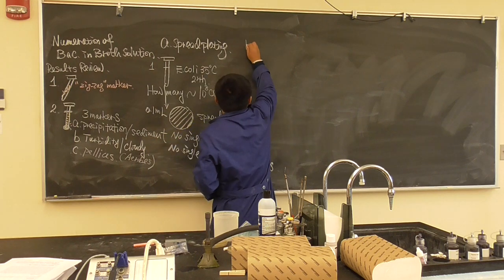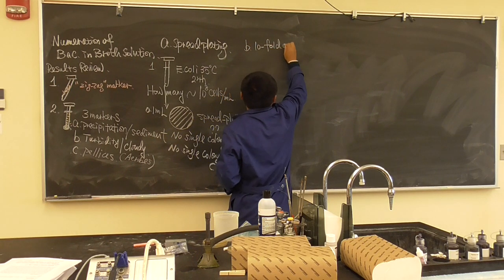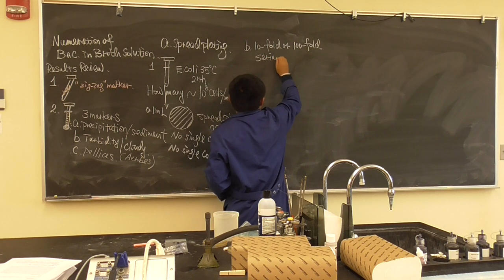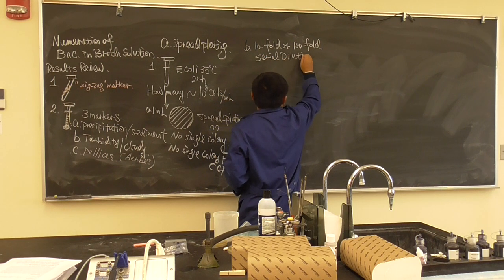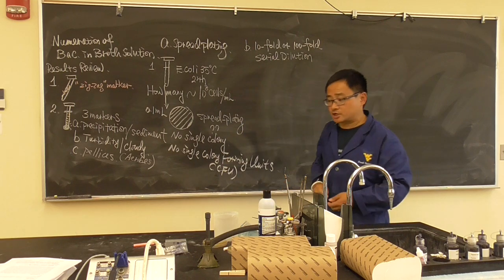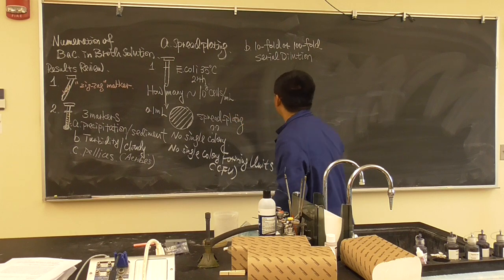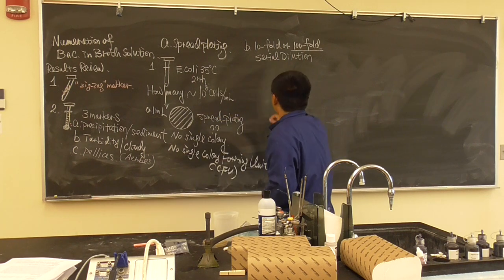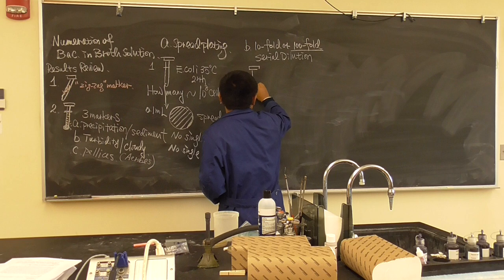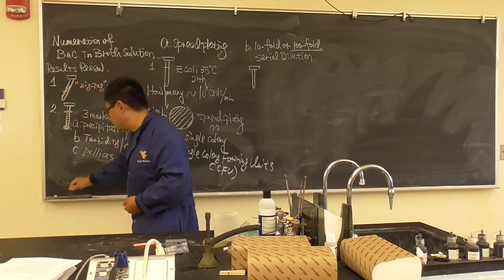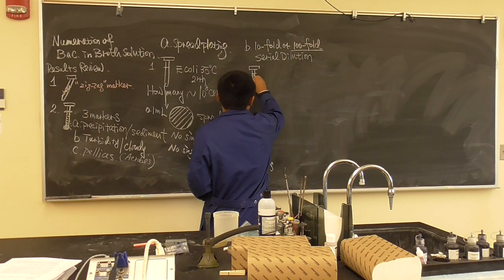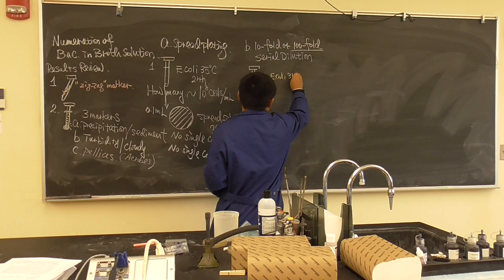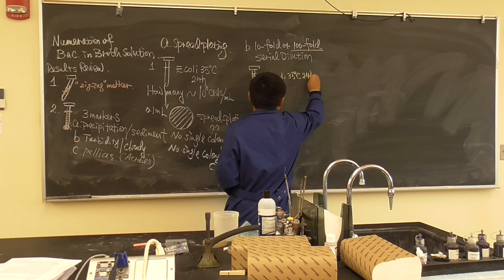We have to do a 10-fold or 100-fold serial dilution — this is the same thing learned in chemistry class. We will do a 100-fold serial dilution today because it's the first time. So you take the culture growing at 35 degrees Celsius for 24 hours in nutrient broth. Remember the first thing you should do before anything is shake it, because otherwise all the bacteria is at the bottom as precipitation. Make sure to shake it well.